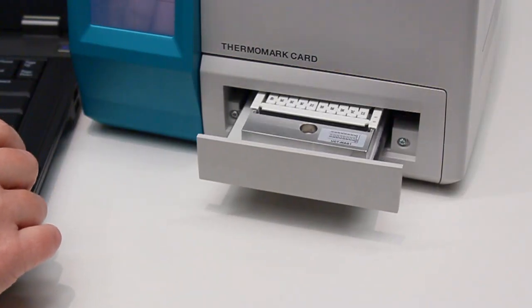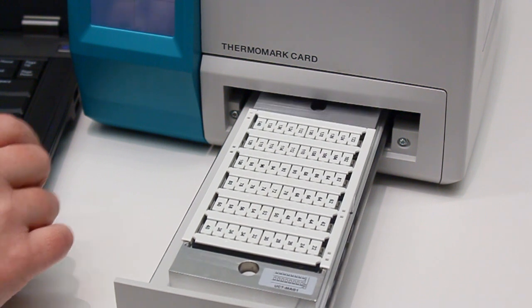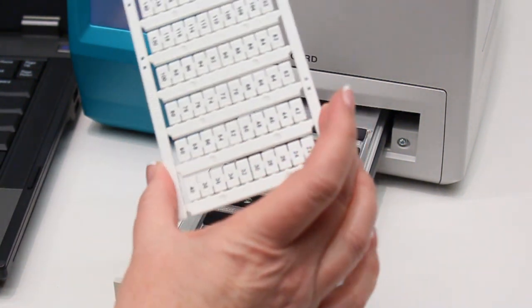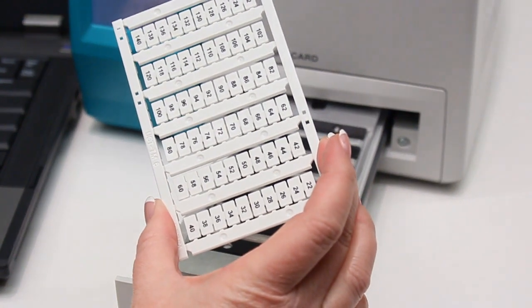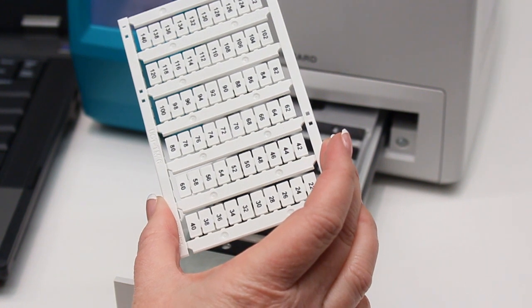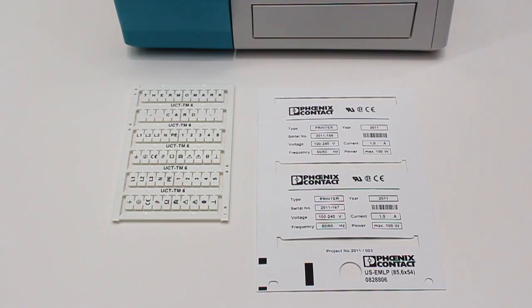The Thermomark card printer has the ability to perform a test print without being connected to a computer. This is useful to test the printer to ensure everything is functioning properly. There are two different test templates programmed into the printer: one is a uni card template and one is a uni sheet template. Samples of both of these materials were included with the printer.